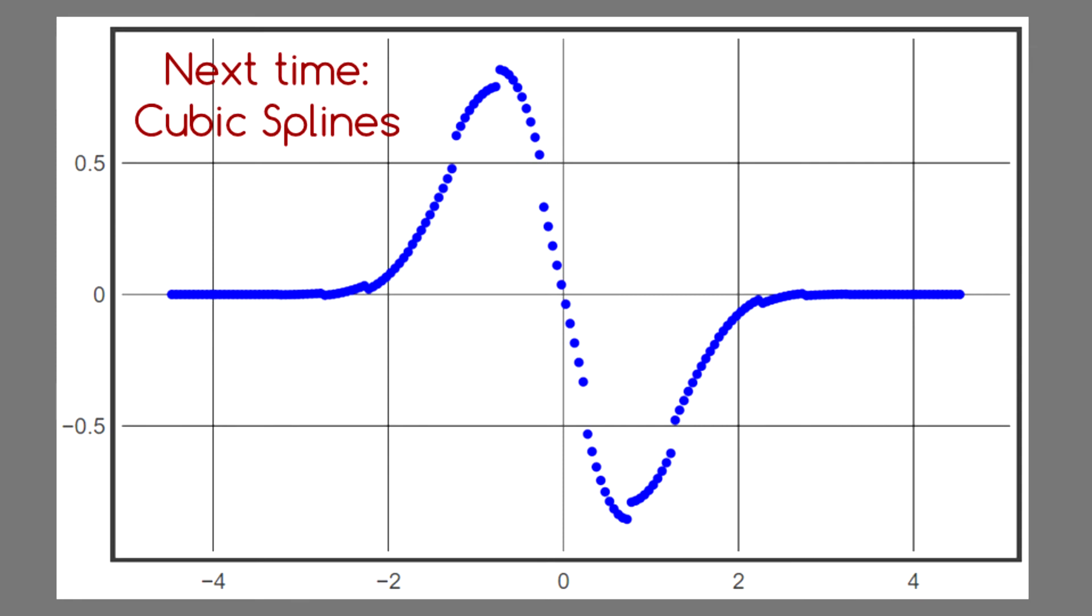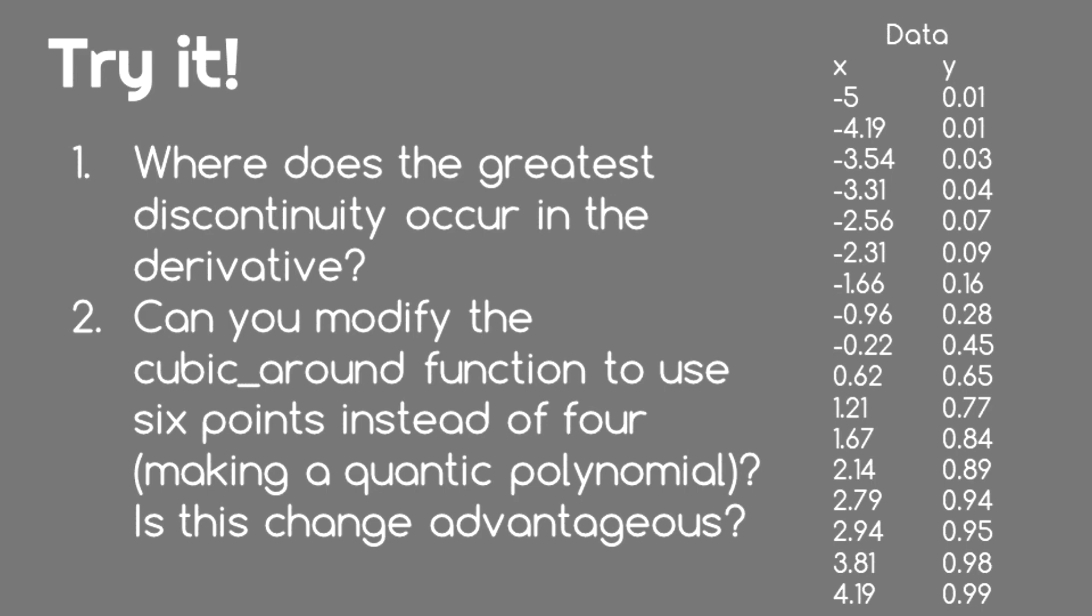The answer we'll see next time is our final interpolation scheme, the cubic spline. You should now be able to use cubic Lagrange interpolation on a set of data to obtain values between the data points. Copy the code in the link in the description below and enter this data into a list. Then, use the cubic Lagrange interpolation function to answer the questions on the screen.